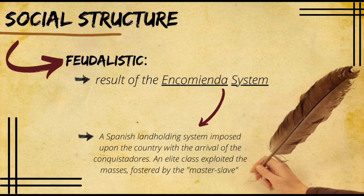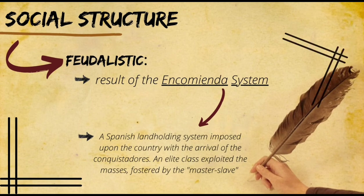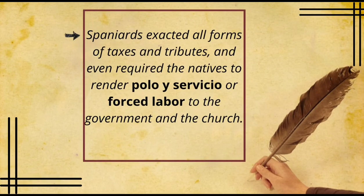The Philippines had this feudalistic system as a result of the encomienda system — a Spanish land-holding system imposed upon the country with the arrival of the conquistadores. An elite class exploited the masses, fostered by a master-slave relationship between the Spaniards and the Filipinos. The Spaniards exacted all forms of taxes and tributes and even required the natives to render polo y servicio, or forced labor, to the government and the church. Consequently, the poor became poorer and the rich became richer.